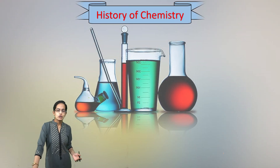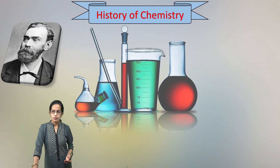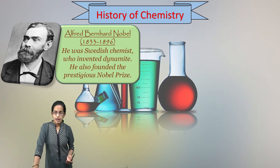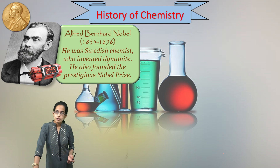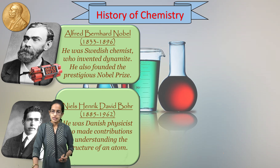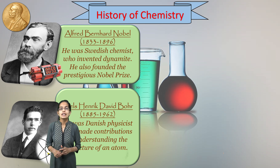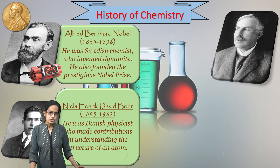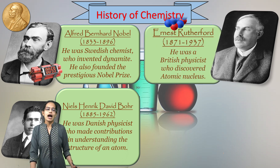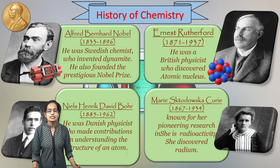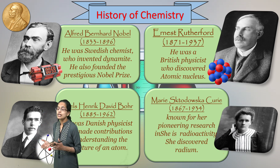The next important developments involve four major scientists. Alfred Nobel was a Swedish chemist who invented dynamite, and in his name the Nobel Prize has been awarded. Niels Bohr was a Danish physicist known for his contribution towards the atom. Rutherford's atomic nucleus model has been very important. Finally, Madame Curie is known for her discovery of radioactivity and the discovery of radium.